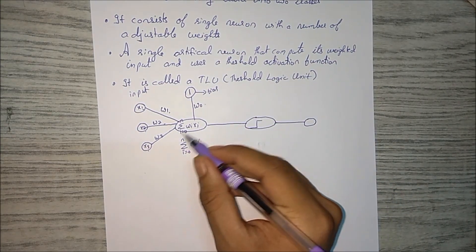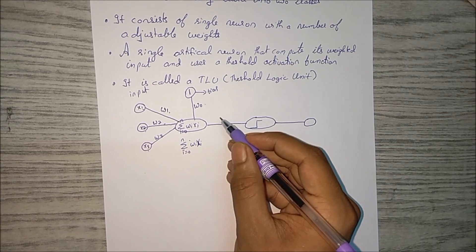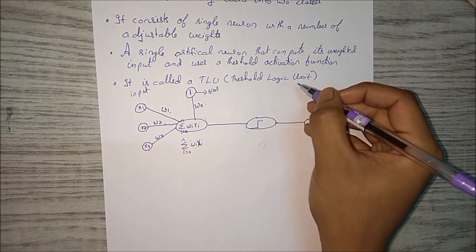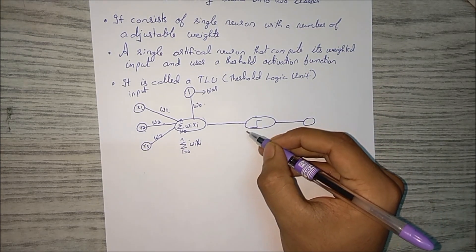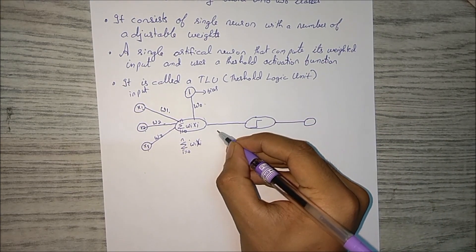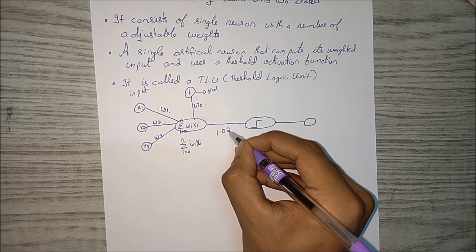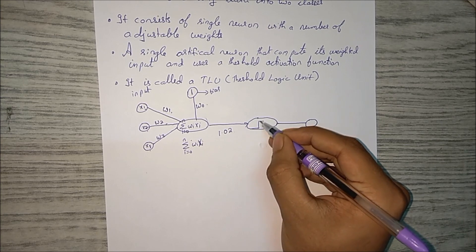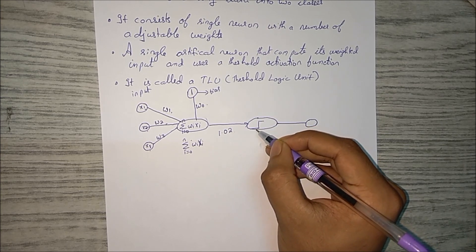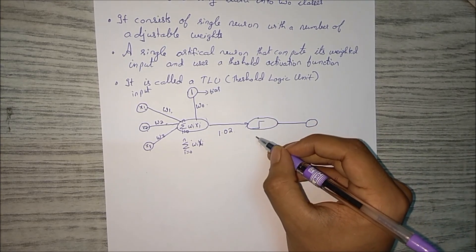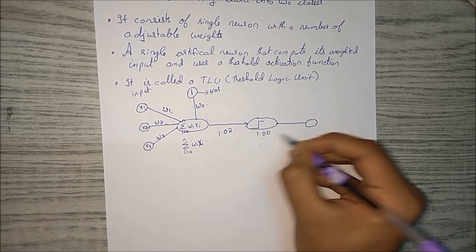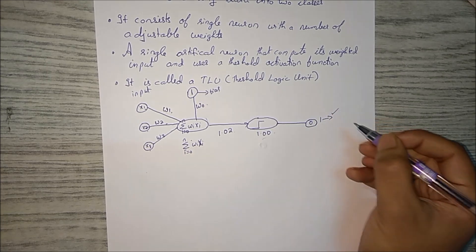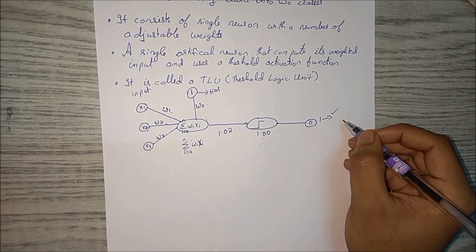So after this summation function we perform some adjustment in the summation function that is done by threshold activation function. So what this does is, suppose let's say the output was 0.02 after this summation function. What it does over here - it performs some activation function. Let's say after this it will make it as one. The output will be one. So that is how this perceptron works.